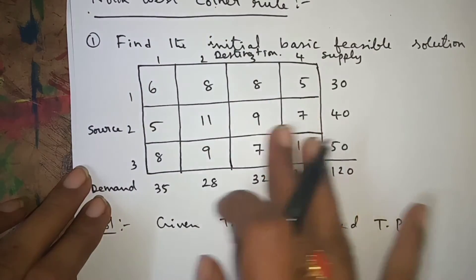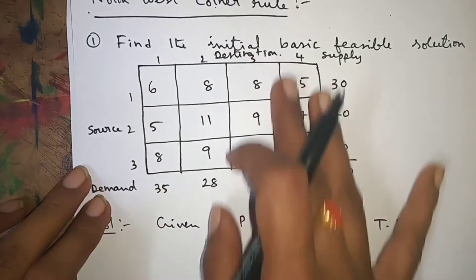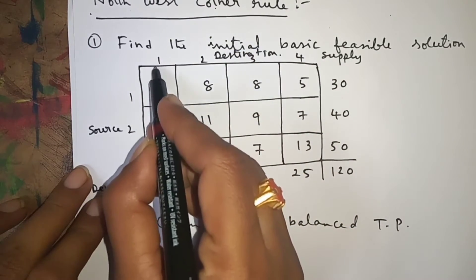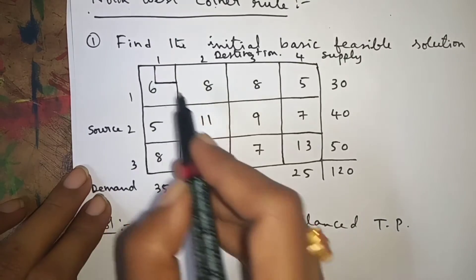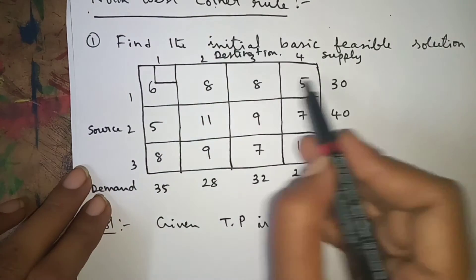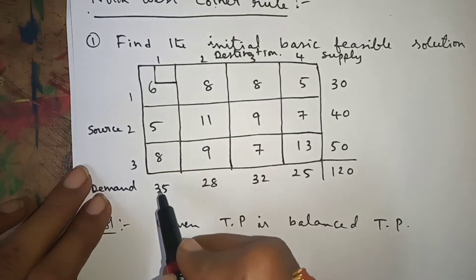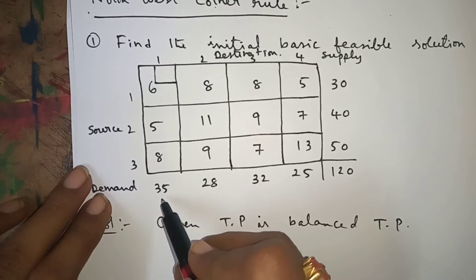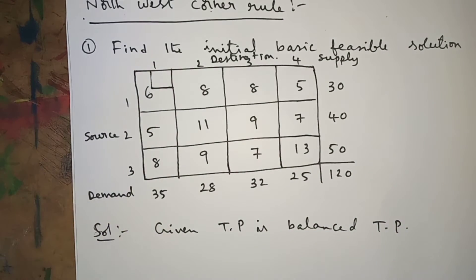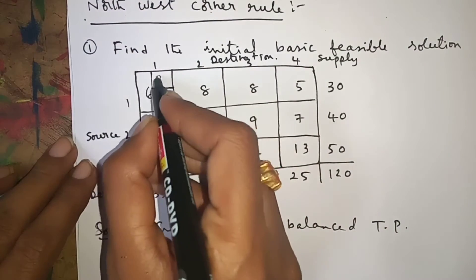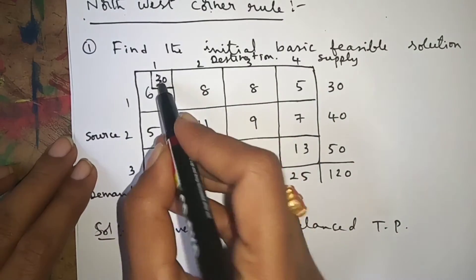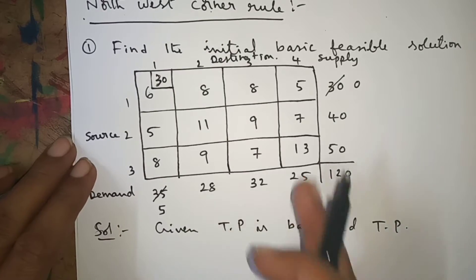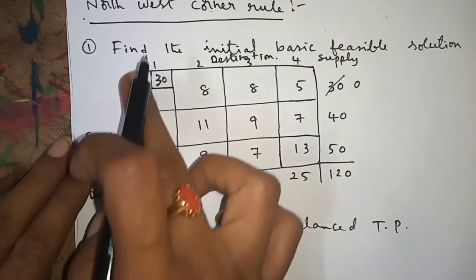According to the complete block, this corner is called the northwest corner. Go to the northwest corner and put one box. Now see the corresponding supply and demand: supply is 30, demand is 35. Out of 30 and 35, the minimum is 30. Put 30 here.